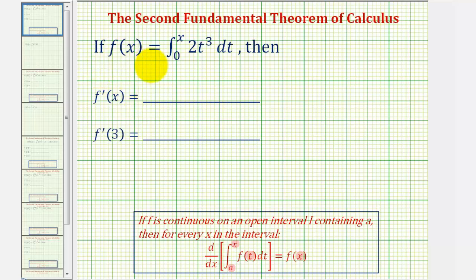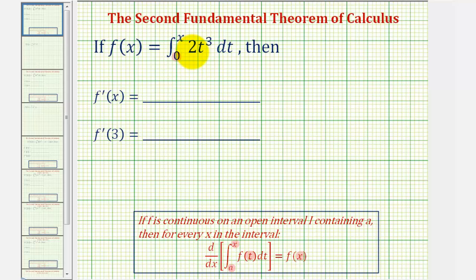So if f of x is equal to this integral, we want to find f prime of x and f prime of three. The first thing we should recognize is that zero is in an interval where the function f of t equals two t to the third is continuous — notice this function is continuous everywhere. And second, the upper limit of integration is the variable x.